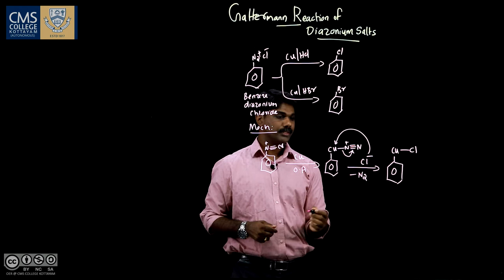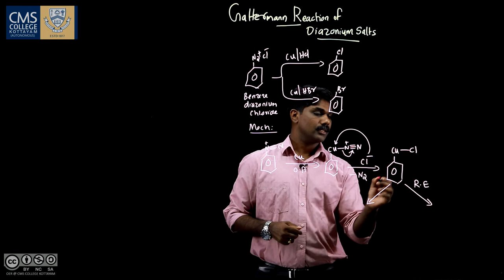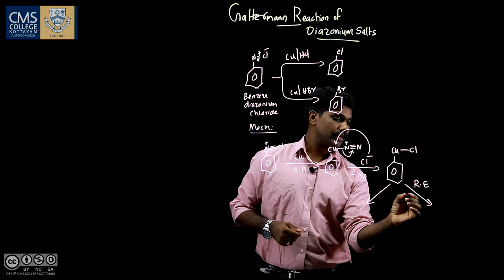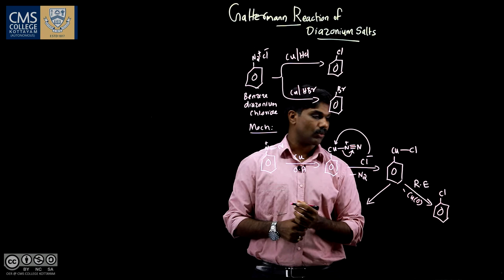This can be converted into product via two pathways. One is reductive elimination. This copper gets reductively eliminated. This copper plus 2 oxidation state converts into copper 0 and we get the final product, chlorobenzene.